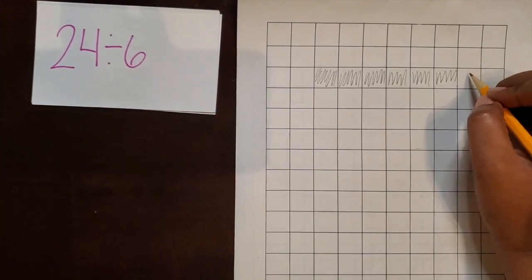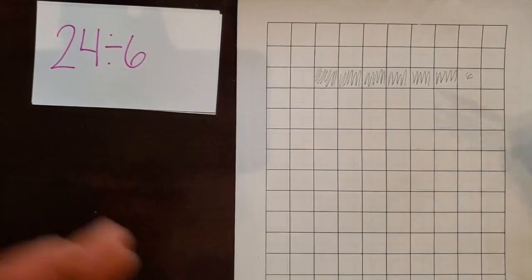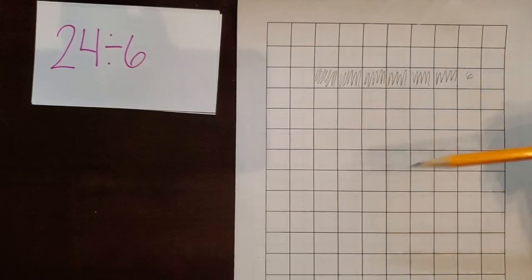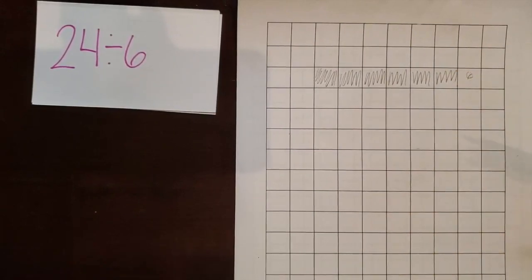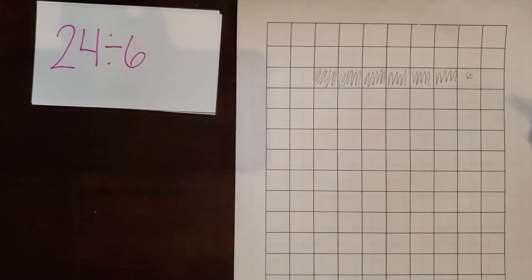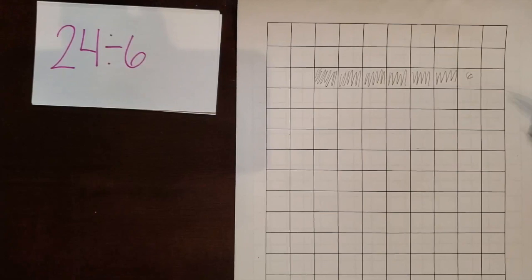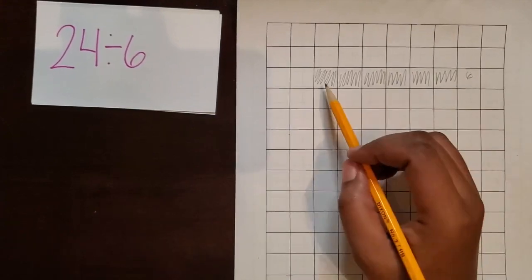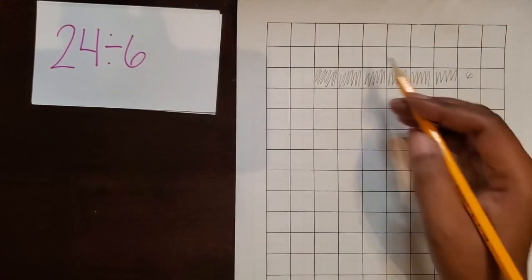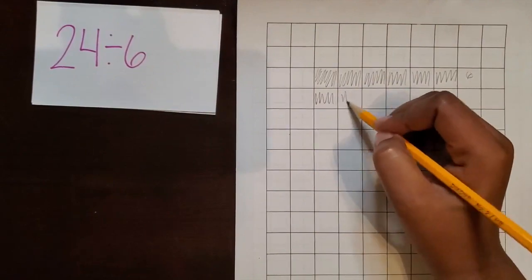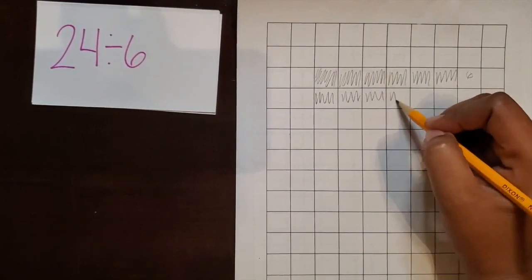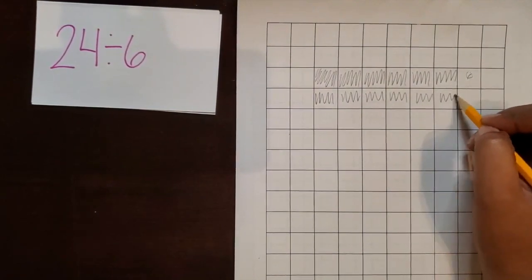So I'm going to write a note over here on the side. When kids are counting rows or columns or groups, I always want them to have little notes just to help them count so that they don't lose their total count as they go along. So we have 6 square units. I'm going to shade in another row of 6.